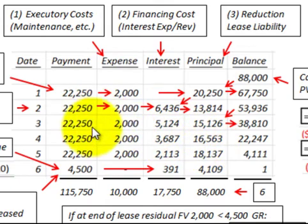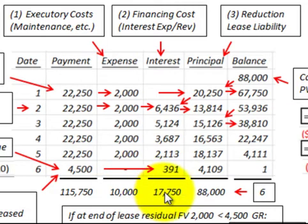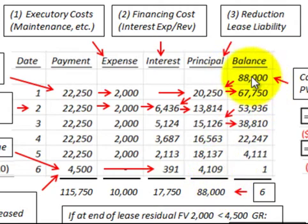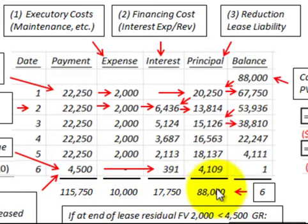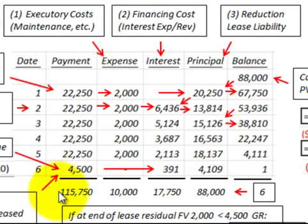To determine totals in the amortization schedule, simply sum the columns for each year — total payments, total executory expense, total interest expense, and total principal amount. The principal was reduced by $88,000, starting at $88,000 and ending at zero. The total payment amount of $115,750 equals the sum of executory expenses, interest expense, and principal reduction.